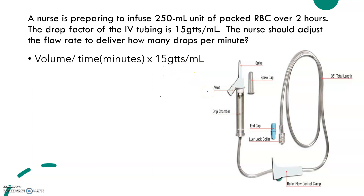Not all IV tubings have the same drip factors. When it says 15 gTTS per ml, what it is saying is that 15 drops — one, two, three, four, up to 15 drops — that drop in this chamber, 15 of those give you one ml. There are other tubings that may have drip factors like 30 drops per ml, or 60 drops per ml. So when using the tube to calculate manually, make sure you look on the packaging of the IV tubing to find out what the drip factor is.